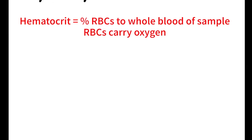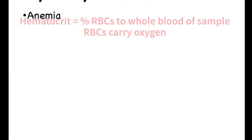Now let's look at some imbalances. We're going to begin by looking at the condition when you don't have enough red blood cells — when your oxygen carrying capacity is low. You need oxygen to synthesize ATP, or the majority of it, through aerobic cellular respiration, and you need ATP for cellular work. This condition is called anemia.